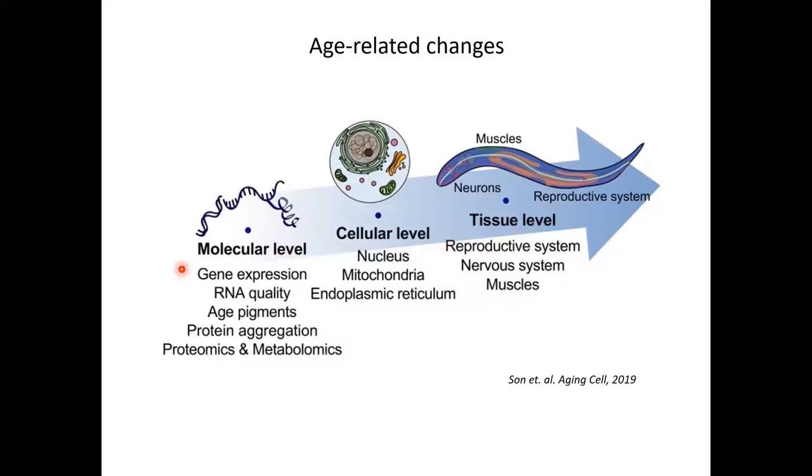At the molecular level, there are age-associated changes in gene expression, for instance, in stress-responsive genes. Also in quality control systems for RNA and proteins. Changes also in fat metabolism and amino acid abundance, as revealed by omics studies. At the cellular level, organelles undergo morphological changes with age, while the impaired function of a couple of those, the mitochondria and the ER, they even seem to promote aging or age-related pathologies.